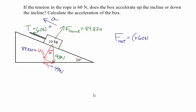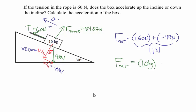The net force is the individual forces added together: positive 60 Newtons (tension, up the incline) plus negative 49 Newtons (parallel component of weight, down the incline), giving 11 Newtons. Newton's second law: 11 Newtons equals 10 kilograms times the acceleration. This time we don't know the acceleration — that's what we're solving for. A net force of 11 Newtons acting on a 10 kilogram object gives an acceleration of 1.1 meters per second squared up the incline.